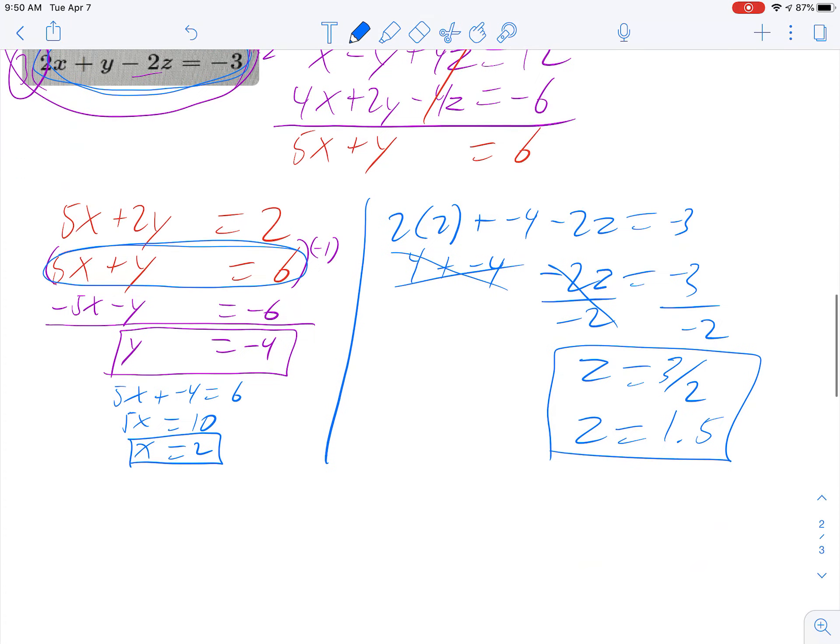And that is that. And so when you write your answer, we're going to write it as an ordered triple. So 2 for the x, negative 4 for the y, and 1.5 or 3 halves. Either way would be fine. That's all for now. Thanks.